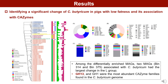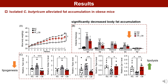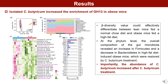Most importantly, among the differentially enriched MAGs, we identified a significant change of C. butyricum in pigs with low fatness and its association with CAZymes. Further, a mouse intervention study confirmed that C. butyricum significantly decreased body fat accumulation, including epididymal, mesenteric, visceral, and subcutaneous fat, and also downregulated the expression of lipogenesis genes. Moreover, isolated C. butyricum increased the enrichment of GH13 in obese mice and increased the abundance of C. butyricum.